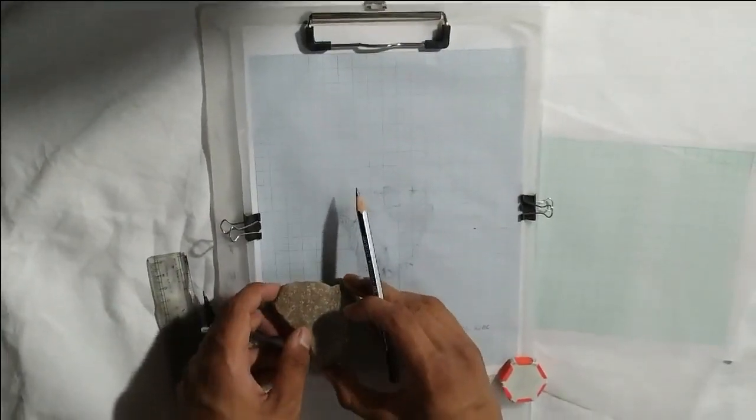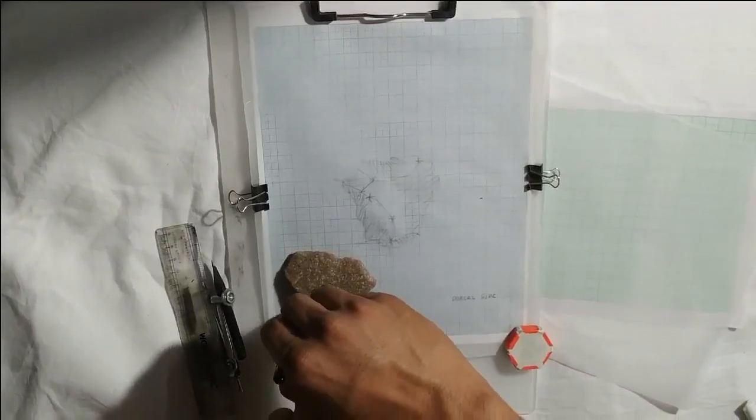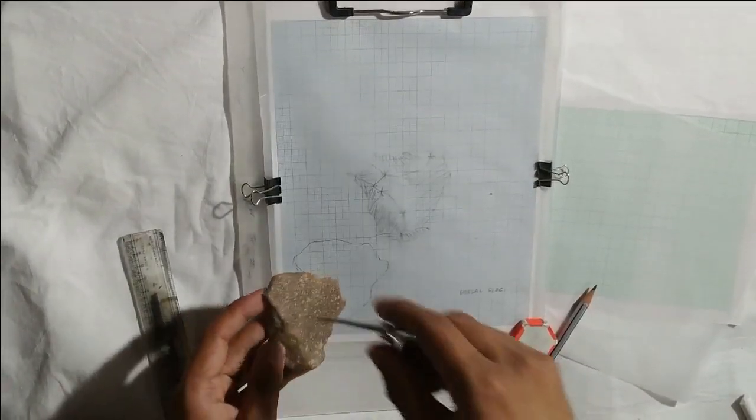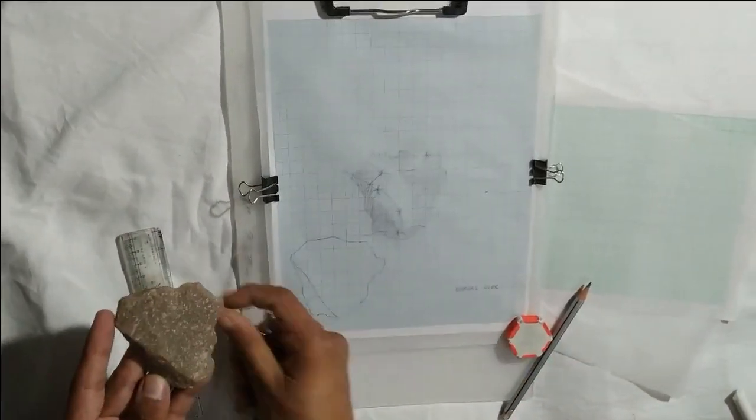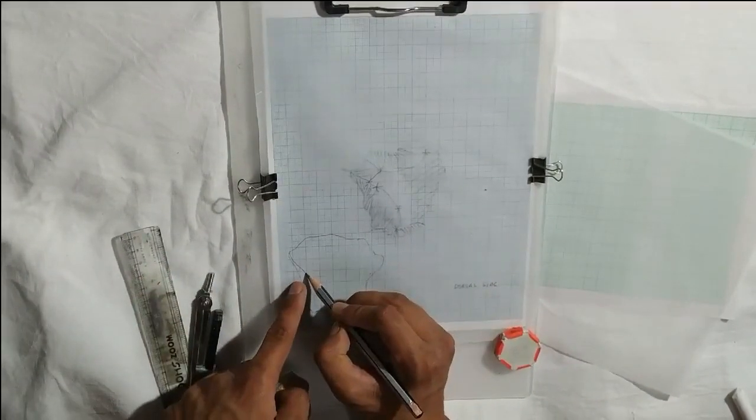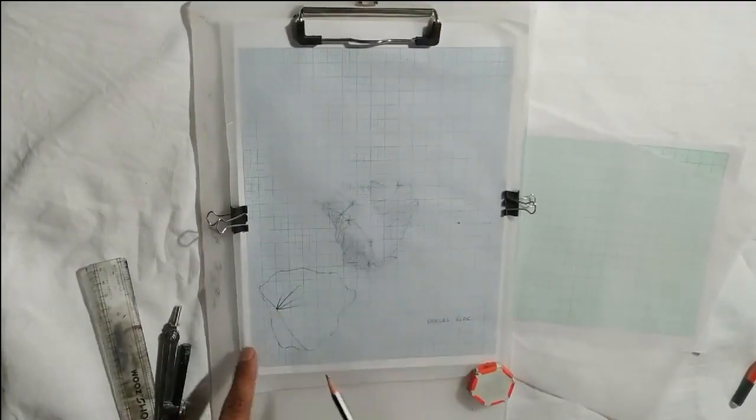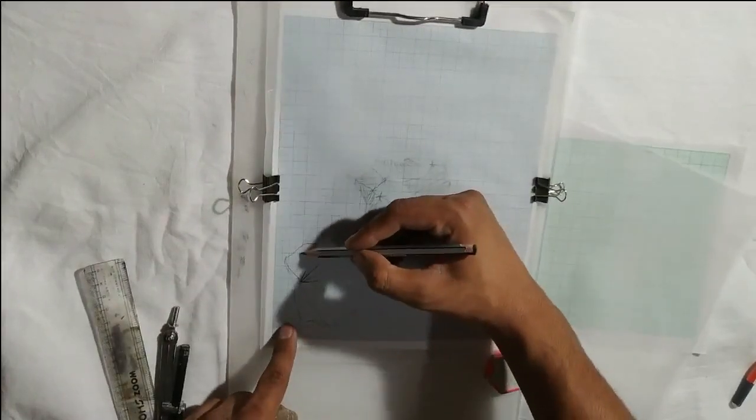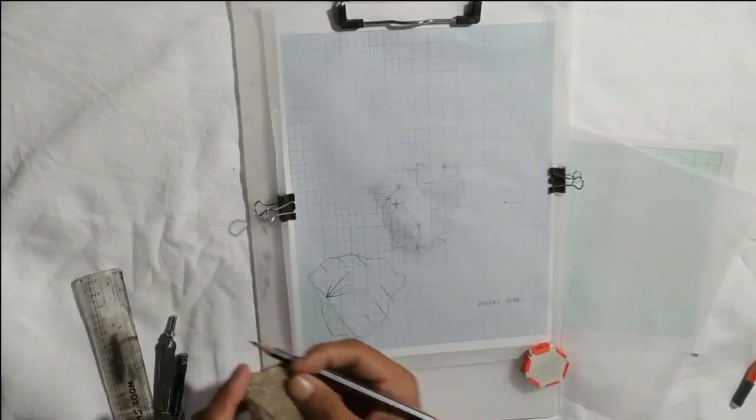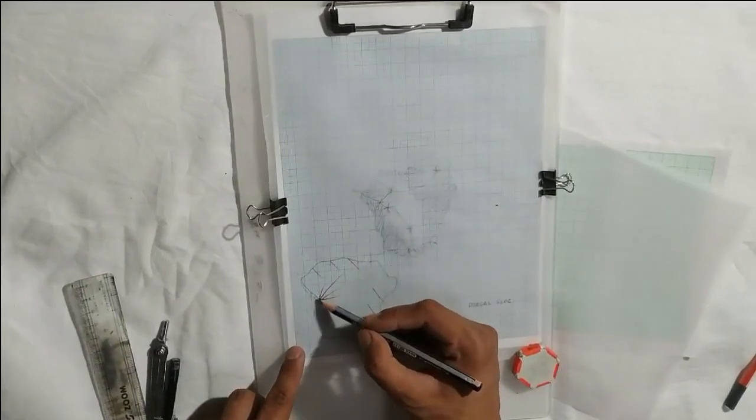The illustration would start by keeping the proximal end towards the illustrator. And the process of drawing the perimeter would be the same as we did in the case of a dorsal side. The flakes would be drawn again using a compass and reference points from the perimeter. The bulb of percussion here is represented by straight lines in the direction of force to represent the ripple marks. The other flake scars are represented by the lines we did earlier in case of the dorsal surface.